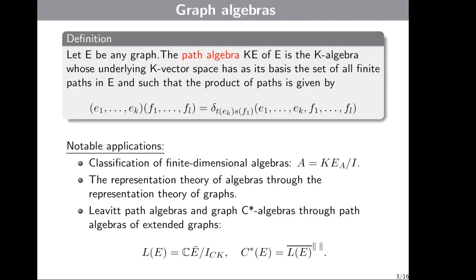The Leavitt path algebra is also a quotient algebra, but instead of graph E we take the extended graph E-bar. The definition of the extended graph will occur on the next slide. And if we take the field to be complex numbers and the ideal to be the Cuntz-Krieger ideal, then after taking completion with respect to the norm we obtain the universal C*-algebra.